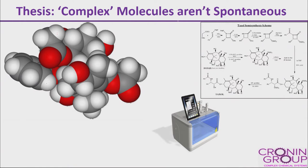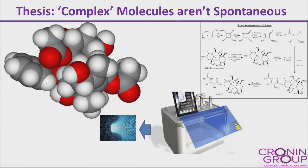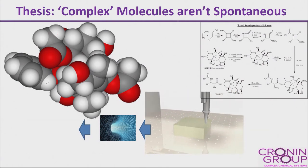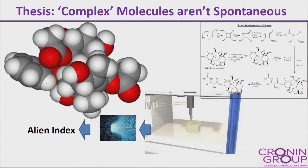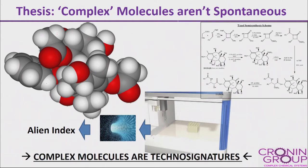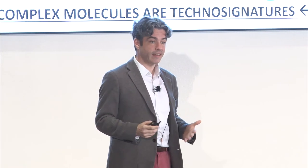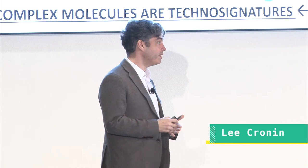I needed money to build robots to search for the origin of life, and no one would give me money for that — so I said I'm going to make drugs instead, and then you can get money. Through this process, we realized the process of digitization of chemical control could allow us to think about information and chemistry differently, and then start to think about an alien index. Let's say that complex molecules are technosignatures. If we can expand our idea of what a technosignature for life would look like, it doesn't have to be a fantastically advanced AI or a new propulsion system — it could be as simple as, or as complex as, a molecule.